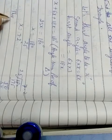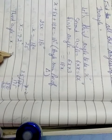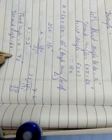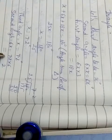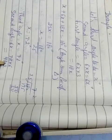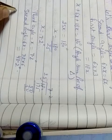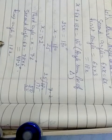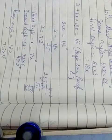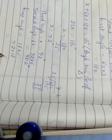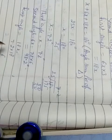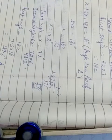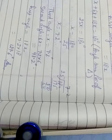The third angle value is x equals 7.2 degrees. The second angle is 6x, which is 6 times 7.2: 2s are 12, 7s are 42, giving 43.2 degrees. The first angle is 18x, which is 18 times 7.2: 18 times 2 is 36, 18 times 7 is 126, giving 129.6 degrees. That is the answer. Question number 19 is skipped and exercise 11A is completed. Tomorrow we will start exercise 11B.